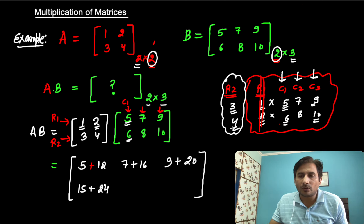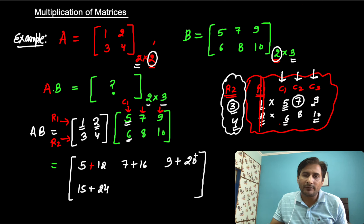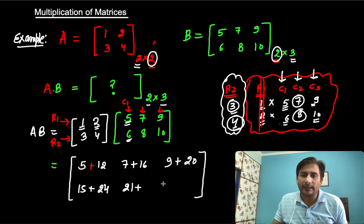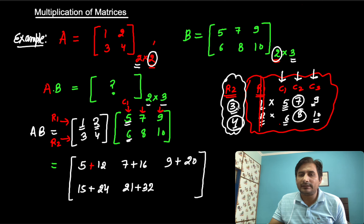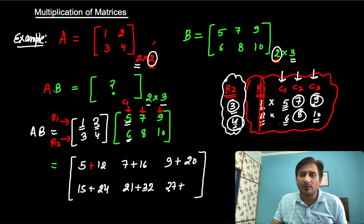Again row 2 multiplied with column 2: 3×7 = 21, 4×8 = 32. So 21+32 = 53. Then row 2 multiplied with column 3: 3×9 = 27, plus 4×10 = 40. So 27+40 = 67.